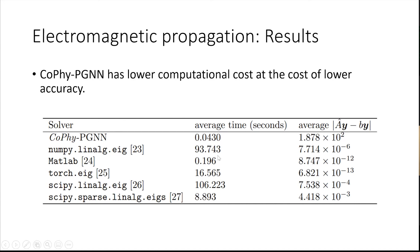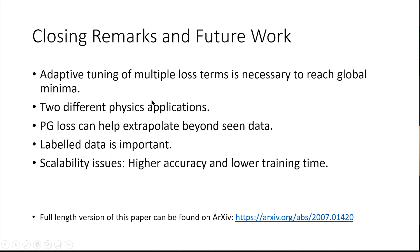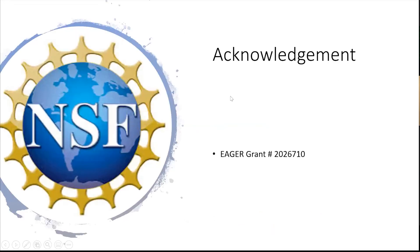Just to wrap up, we have shown that adaptive tuning of multiple loss terms is necessary in some problems especially in eigenvalue problems. We showed it on the quantum physics problem and electromagnetic propagation problem. We've shown that both the labeled data and the PG loss are important, we cannot do with one without the other. Finally we have scalability issues, when the system is too big we need to work on that to make the accuracy higher and the training time lower. We have more details in our full paper on arXiv if you're interested. Finally we just want to acknowledge NSF's funding of this work. Thank you.